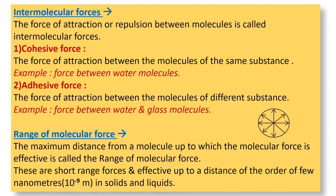If we consider one central molecule surrounded by other molecules, we can imagine a sphere centered on that molecule. The radius of this sphere is called the range of molecular force. The central molecule can exert force only on the molecules within this sphere, and those surrounding molecules can also exert force on the central molecule. This range is of the order of a few nanometers, 10⁻⁹ meters.